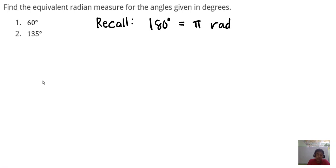So we shall use this conversion factor again to answer this problem. For problem number one, 60 degrees, we need to multiply. Since the given measure of angle is in degrees, the 180 degrees should be at the denominator, and the pi radians should be at the numerator.